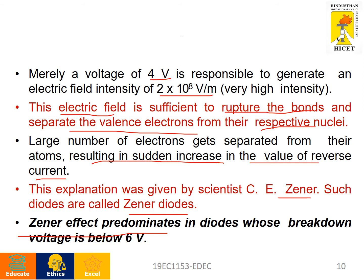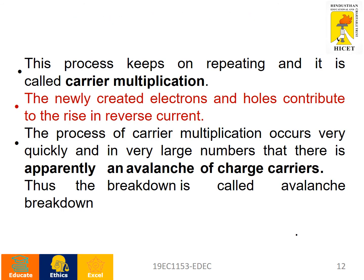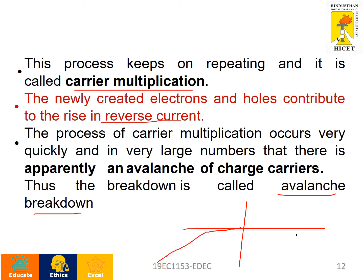Zener effect predominates in diodes whose breakdown voltage is below 6 volts. If the breakdown voltage is greater than 6 volts, it is called avalanche breakdown. In avalanche breakdown, a depletion region is formed by electron-hole pairs, and electrons from the n-region drift towards the p-region. If this process continues, it is called carrier multiplication. The newly created electrons and holes contribute to the rise in reverse current, and collectively this is called avalanche breakdown.